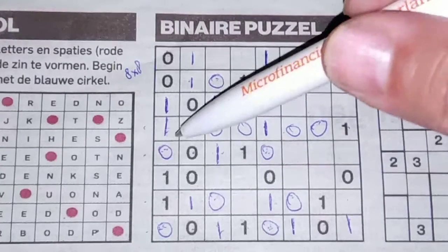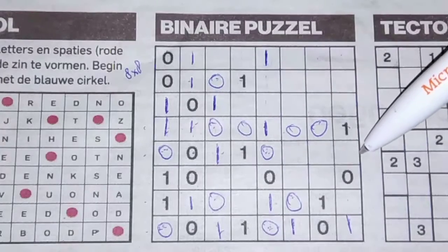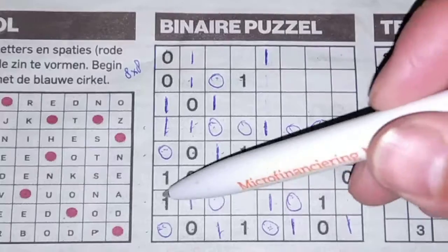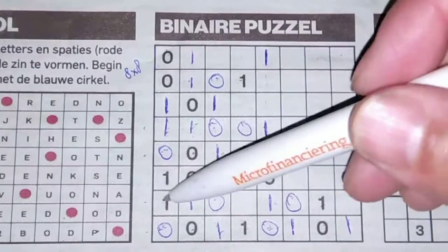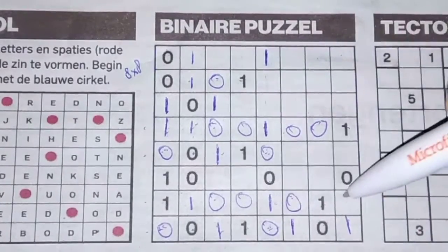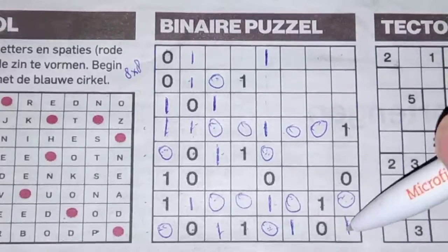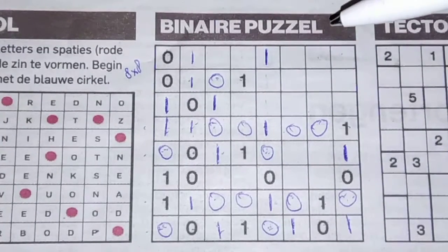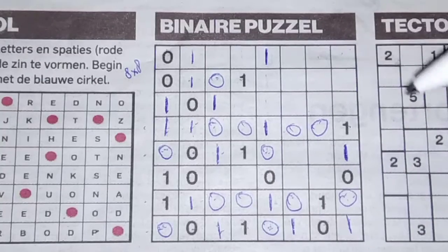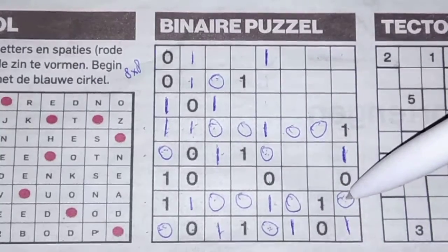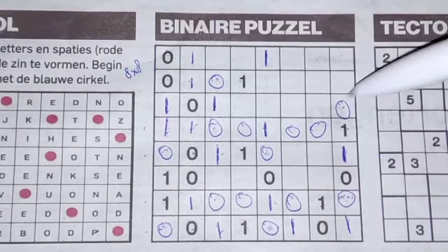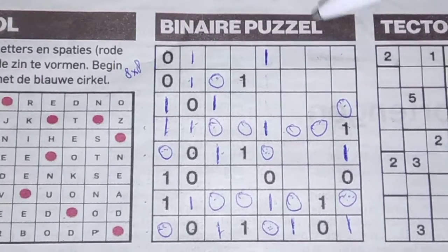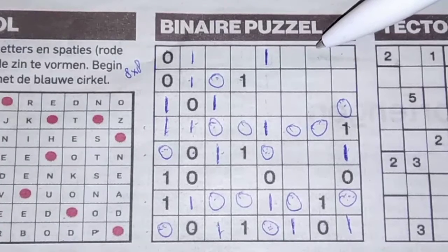Then we have 4 ones, so the rest are zeros. Double zero here, then 1 and 1. Double 1 here and zero, then zero. We have 3 zeros.